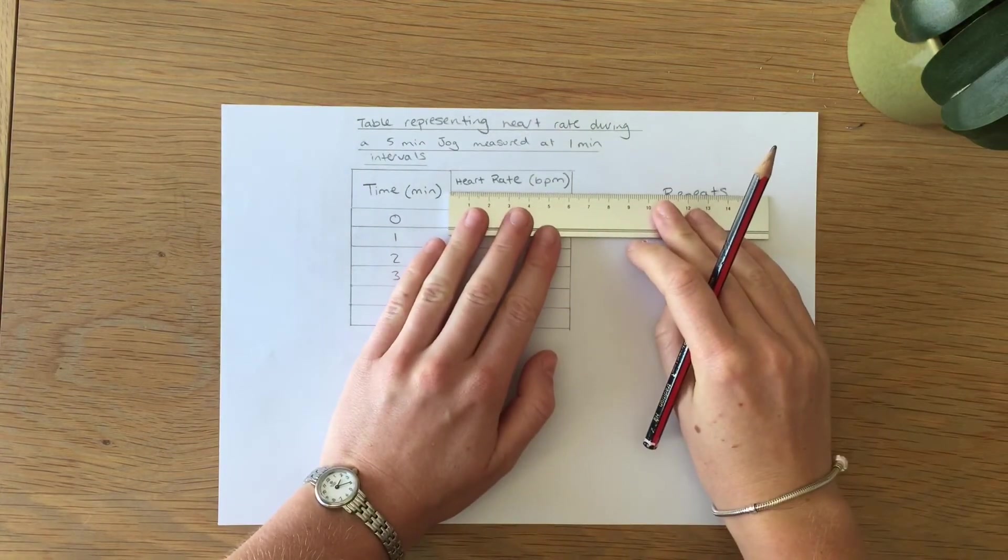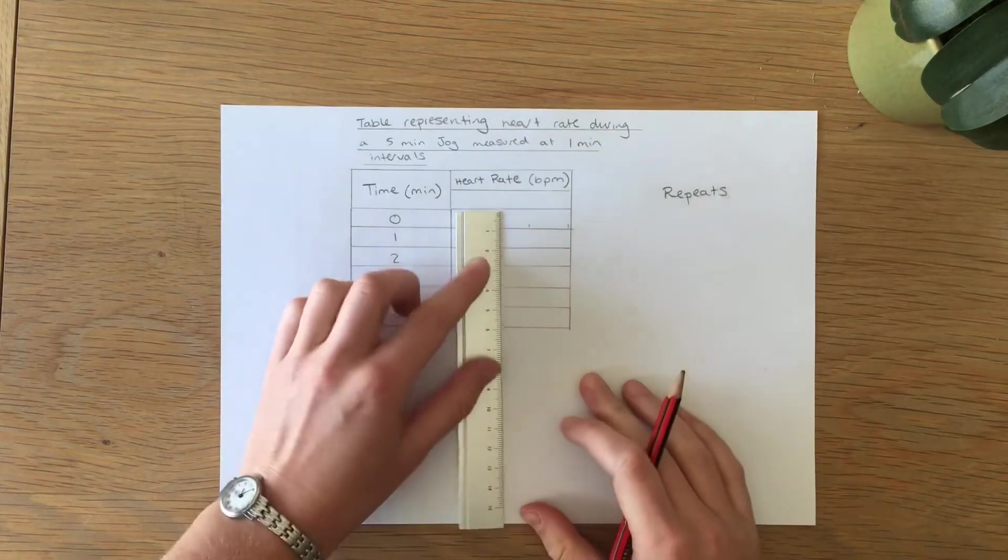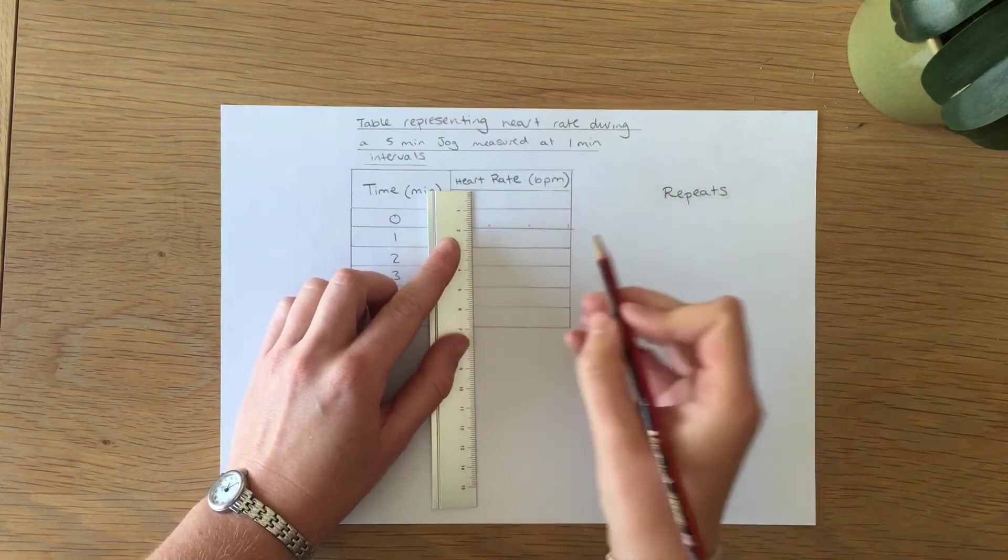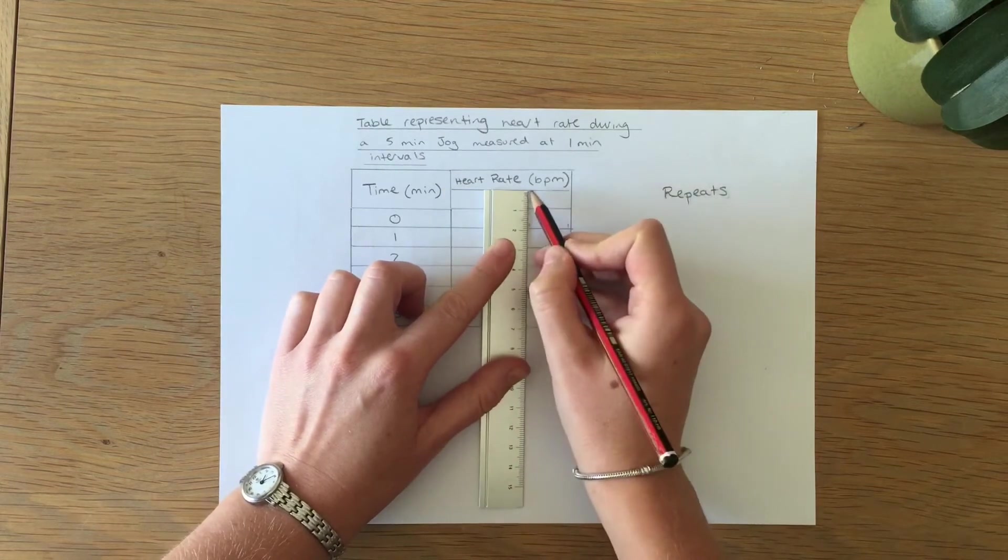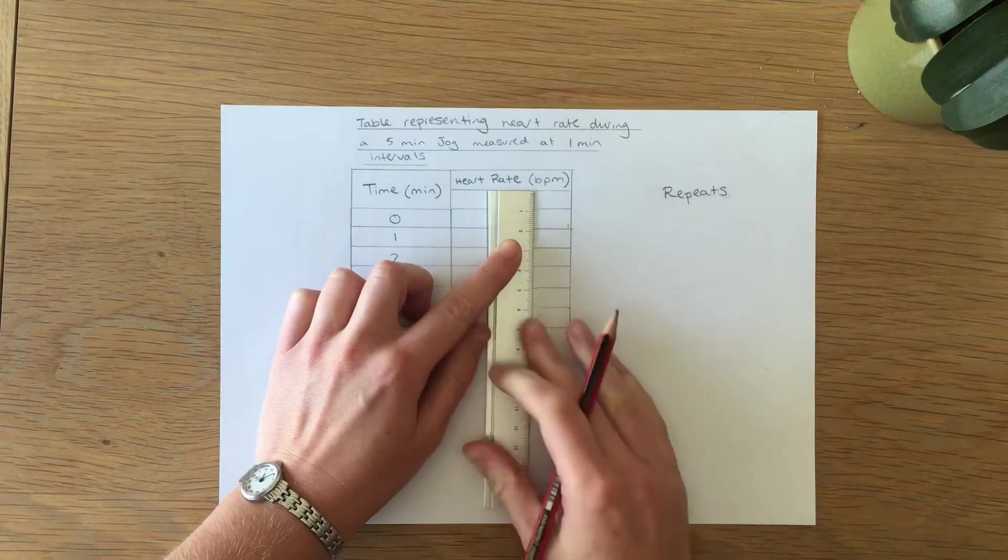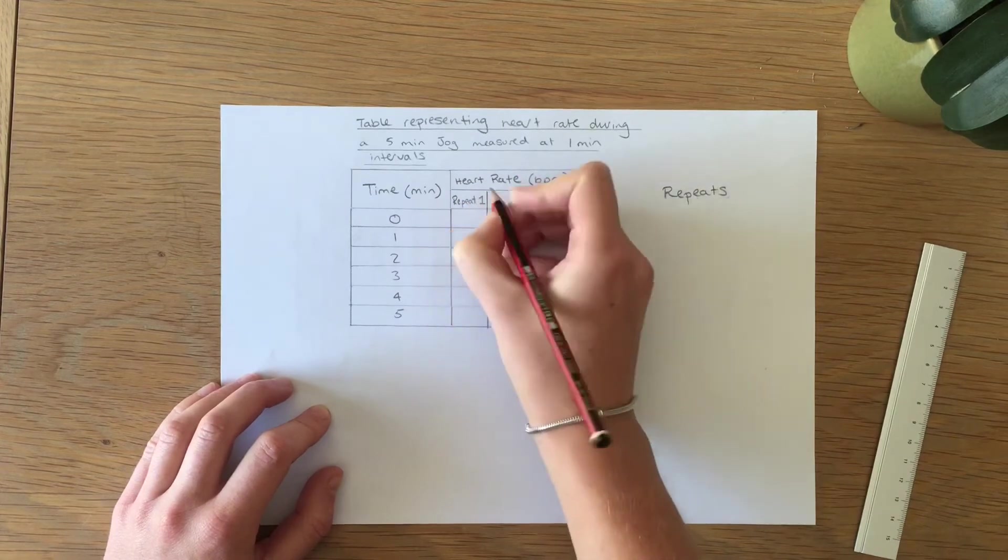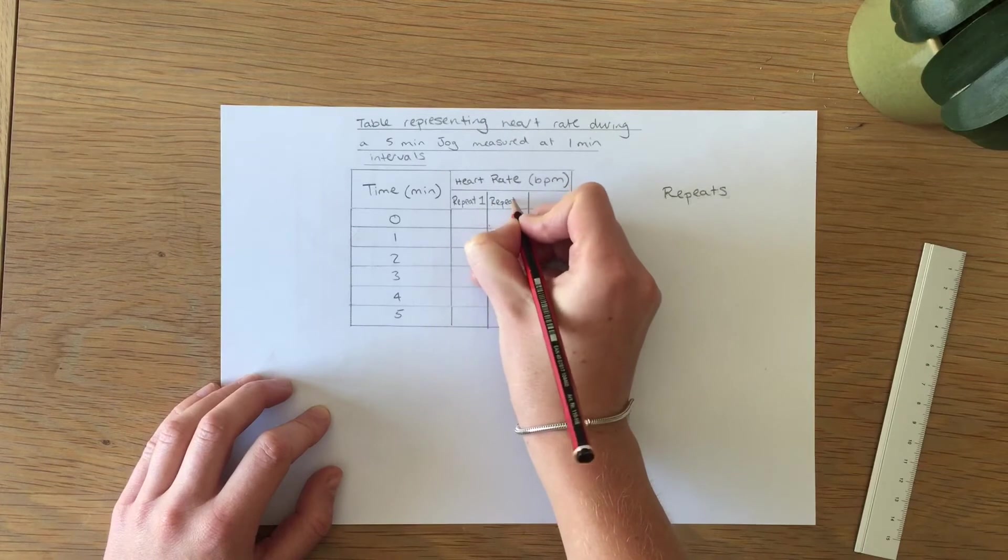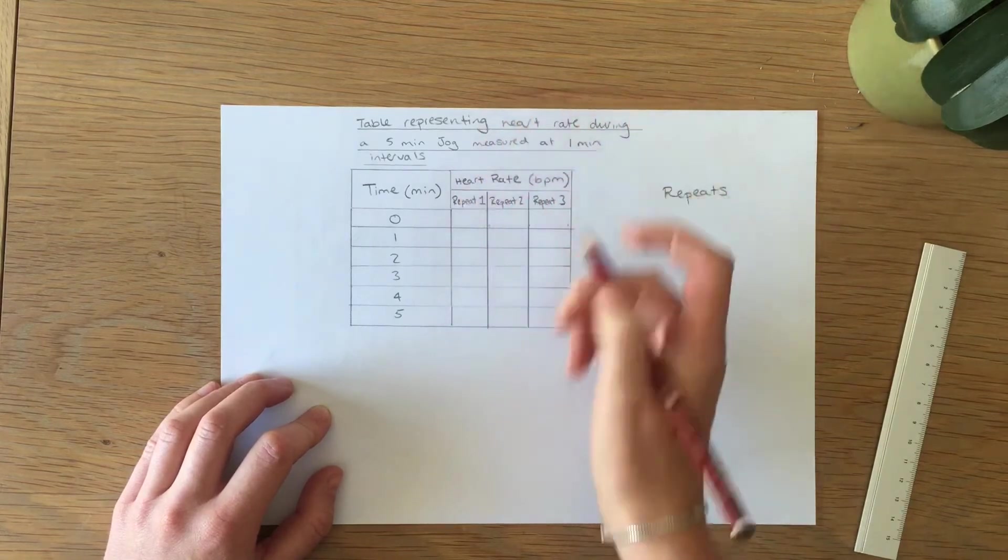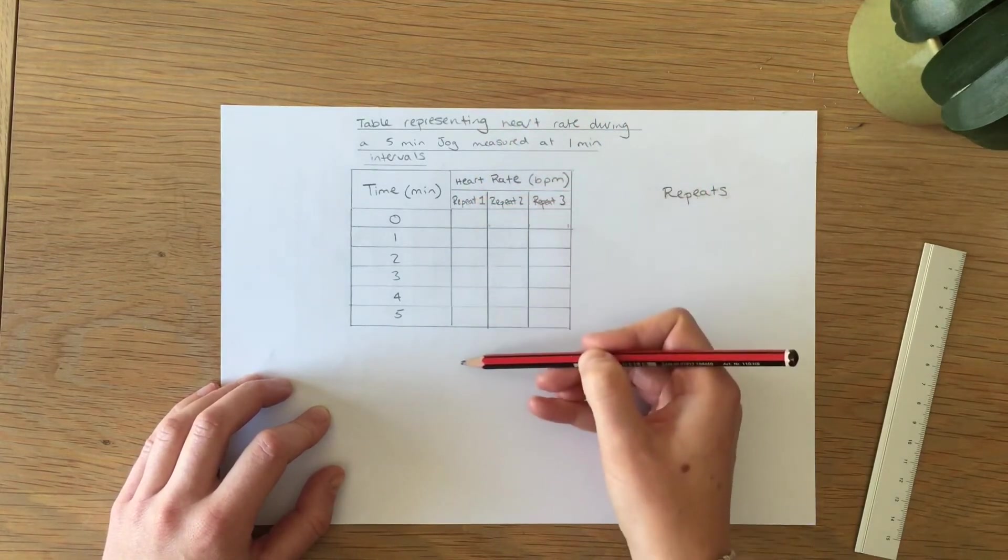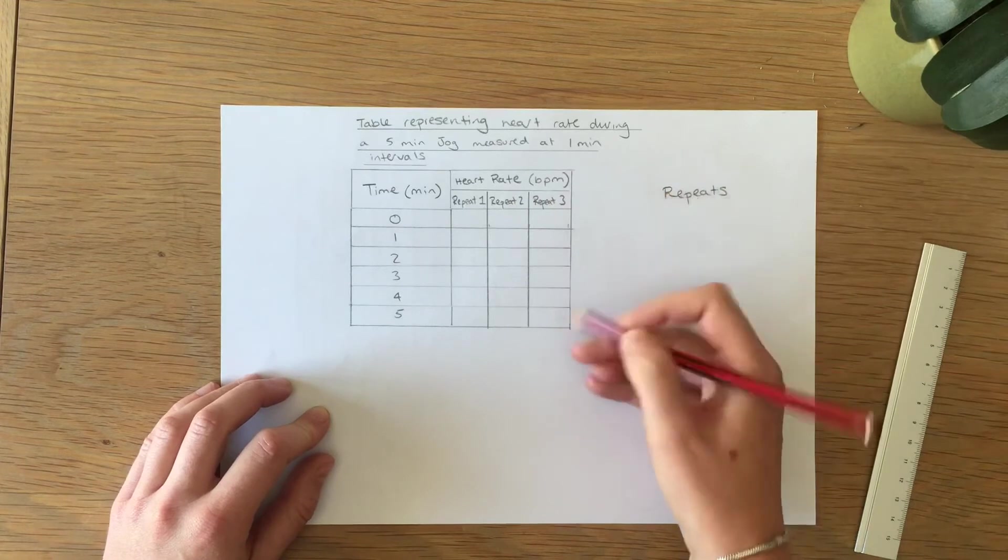What we do is we split the dependent variable column or top row and the column splits into however many repeats you have. Here we're going to have three and we're just going to write repeat one, repeat two, and repeat three. And then in this column you will have the first repeat data, the second repeat data, and the third repeat data.